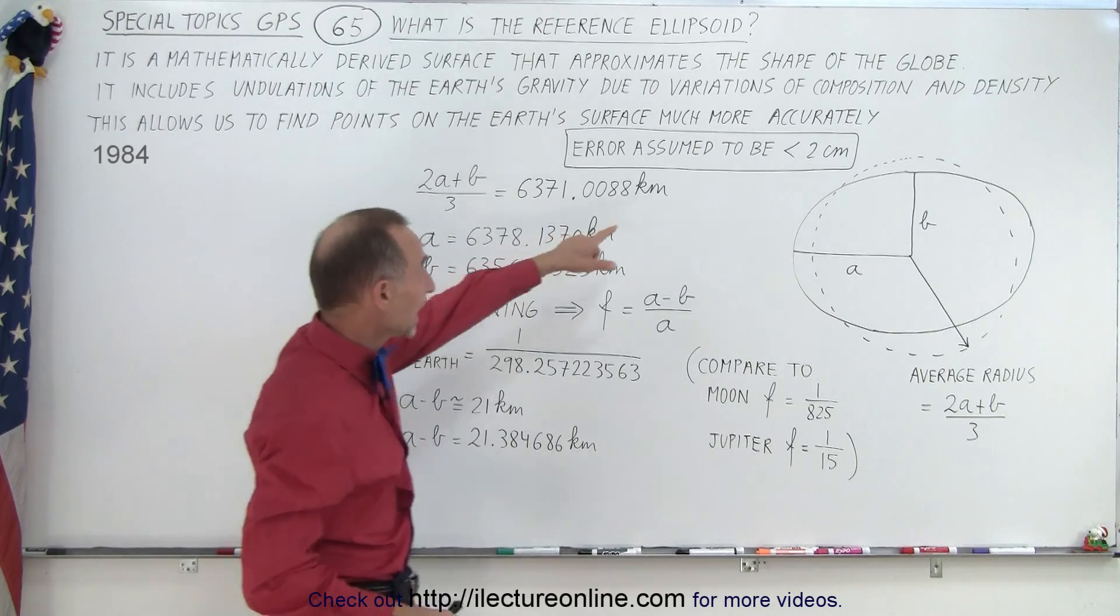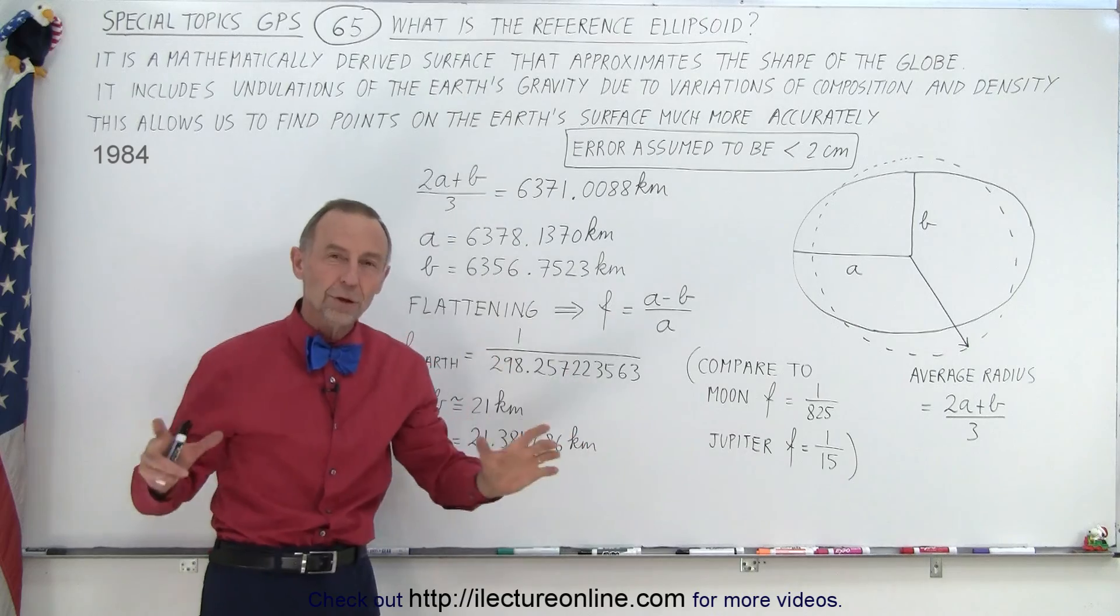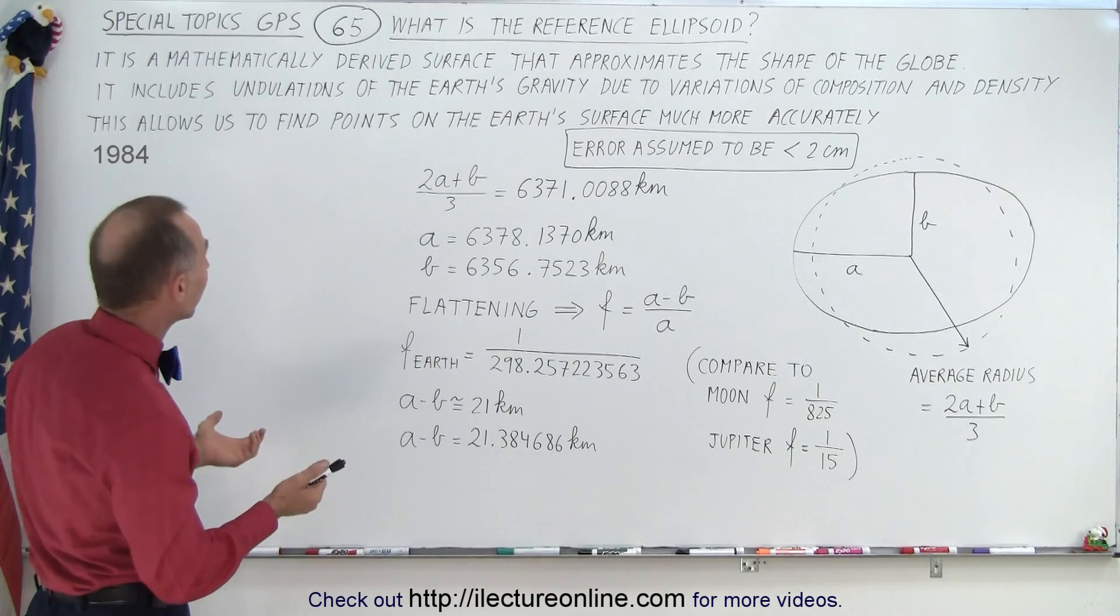Turns out the error that we can now assume is less than 2 centimeters for any point on the Earth's surface. So how's that done?